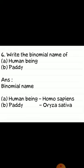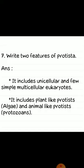Sixth question: write the binomial name of human being and paddy. Answer: A. Human being — Homo sapiens. B. Paddy — Oryza sativa. Seventh question: write two features of Protista. Answer: it includes unicellular and few simple multicellular eukaryotes. It includes plant-like protists (algae) and animal-like protists (protozoans).